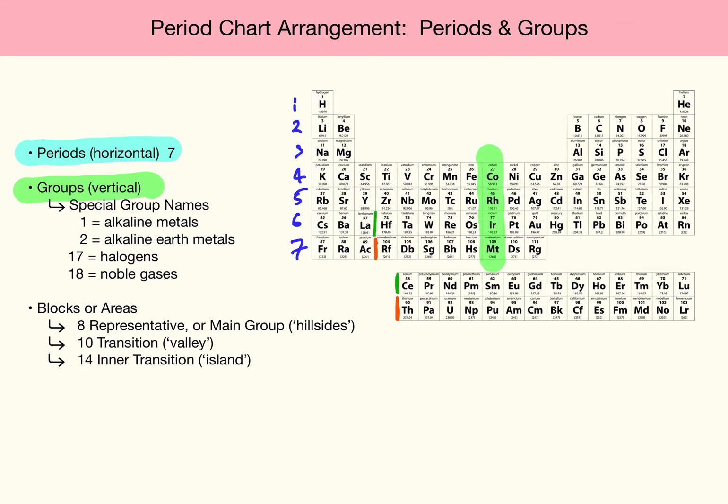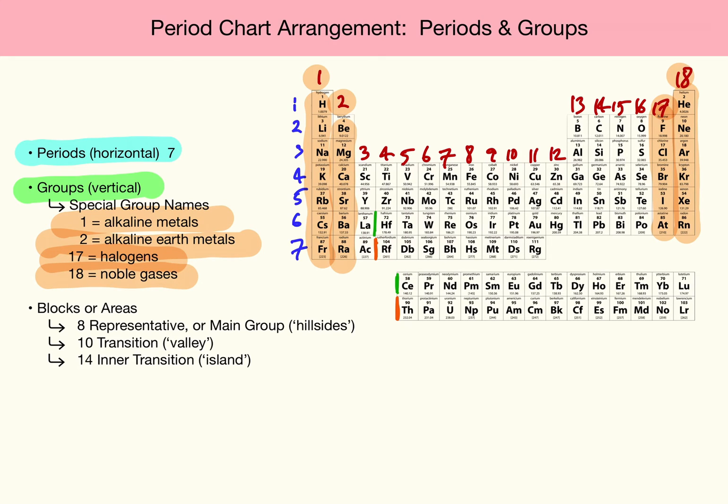Groups are the vertical columns that make up the Periodic Chart, of which there are 18. A number of the groups are given special names, of which I only want you to remember four. The names for Group 1, 2, 17 and 18. Group 1 is also known as the Alkaline Metals. Group 2 is also known as the Alkaline Earth Metals. Group 17 makes up the group known as the Halogens. And Group 18, of which almost everyone is familiar, makes up the group of Noble Gases.